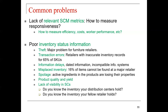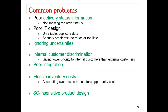Lack of supply chain visibility means not knowing the inventory at your distribution center or what your fellow retailer holds — and that is becoming a major movement with online retailers wanting to see what's going on not only at their manufacturing facility but at their stores. Additional common problems include poor delivery status information, not knowing order status; poor IT design — unreliable, duplicate data, security problems, too much or too little information; ignoring uncertainties; internal customer discrimination, giving lower priority to internal customers than external ones; poor integration; elusive inventory costs where accounting systems do not capture opportunity costs; and supply chain insensitive product design.